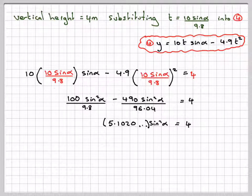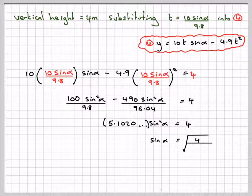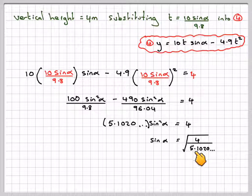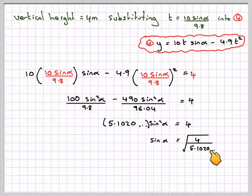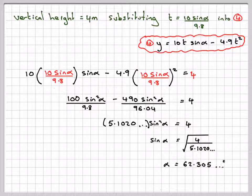This equals 4, therefore sin alpha is the square root of 4 over 5.1020, so alpha equals sin to the minus 1 of that which is 62.305 degrees.